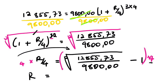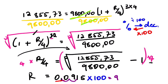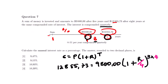Punching that into the calculator, the answer is 0.0915. Since this is in decimal form, we multiply by 100 to convert to percentage, giving us 9.15%. Looking at our options, the correct option is option 2 for this question.